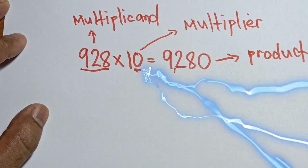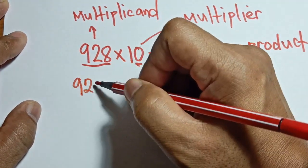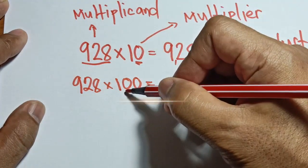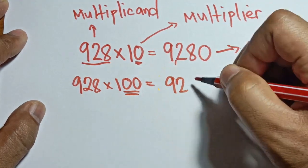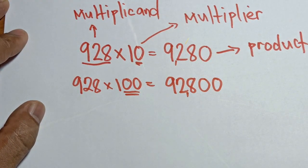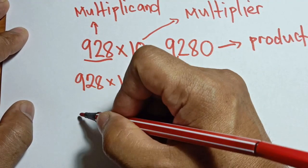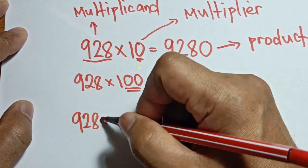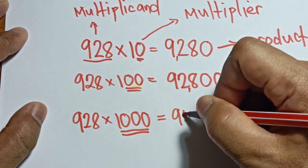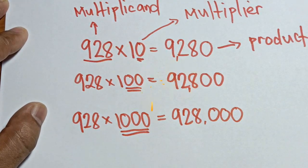If you multiply 928 by 100 — there are two zeros in 100 — copy the multiplicand, 928, and add two zeros. The answer becomes 92,800. Lastly, if you multiply 928 by 1,000 — there are three zeros in 1,000 — copy the multiplicand 928 and add three zeros.